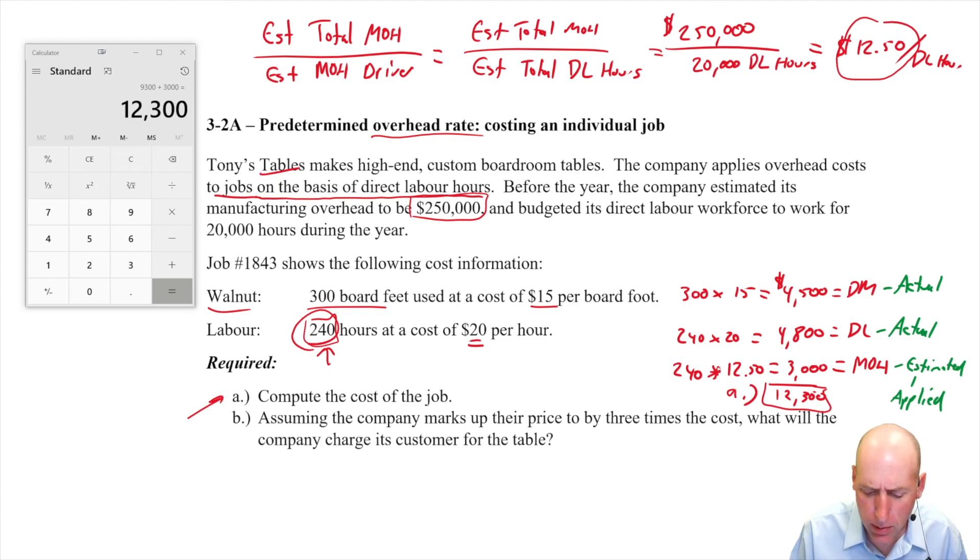Part B: Assuming the company marks up their price by three times the cost, what will the company charge its customer for the table? They charge three times whatever it costs them. It costs them $12,300. They're going to charge their customer $36,900. That's their price. That is the answer for part B.